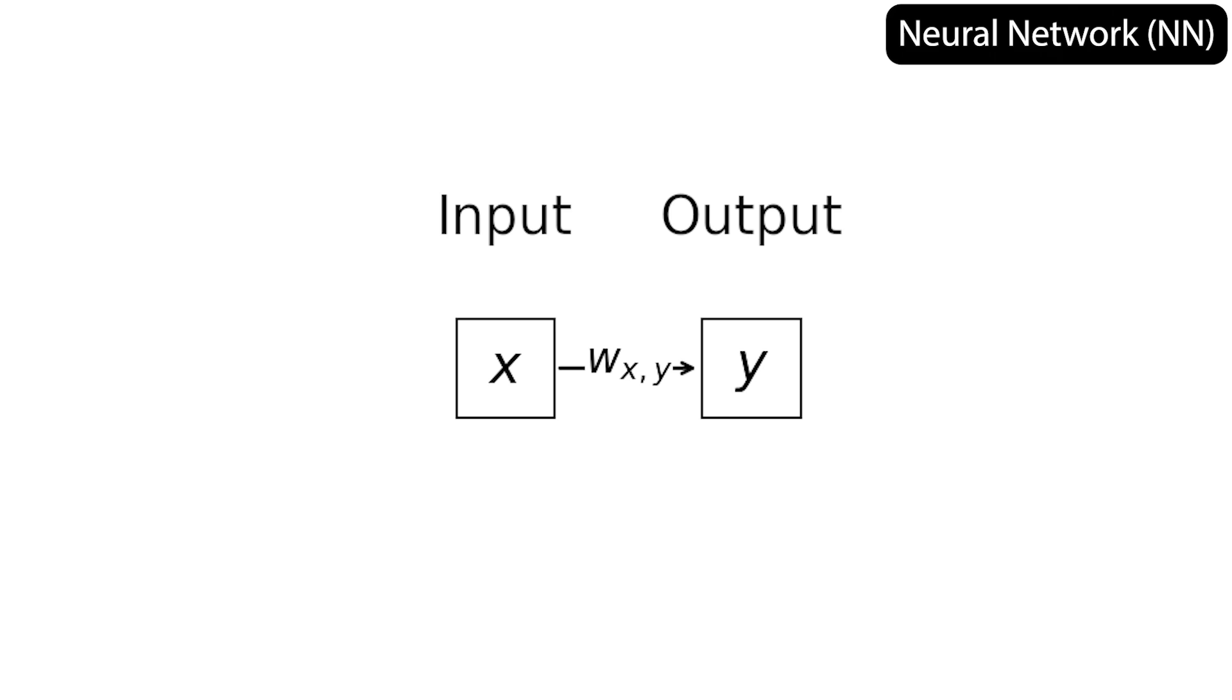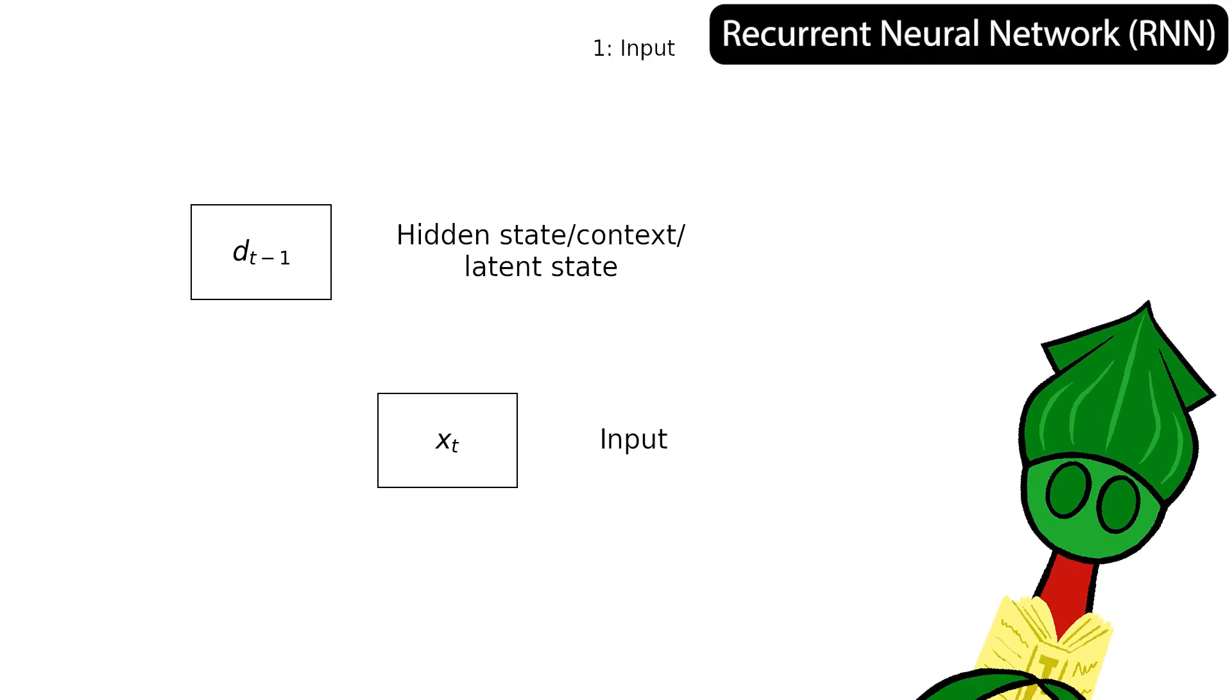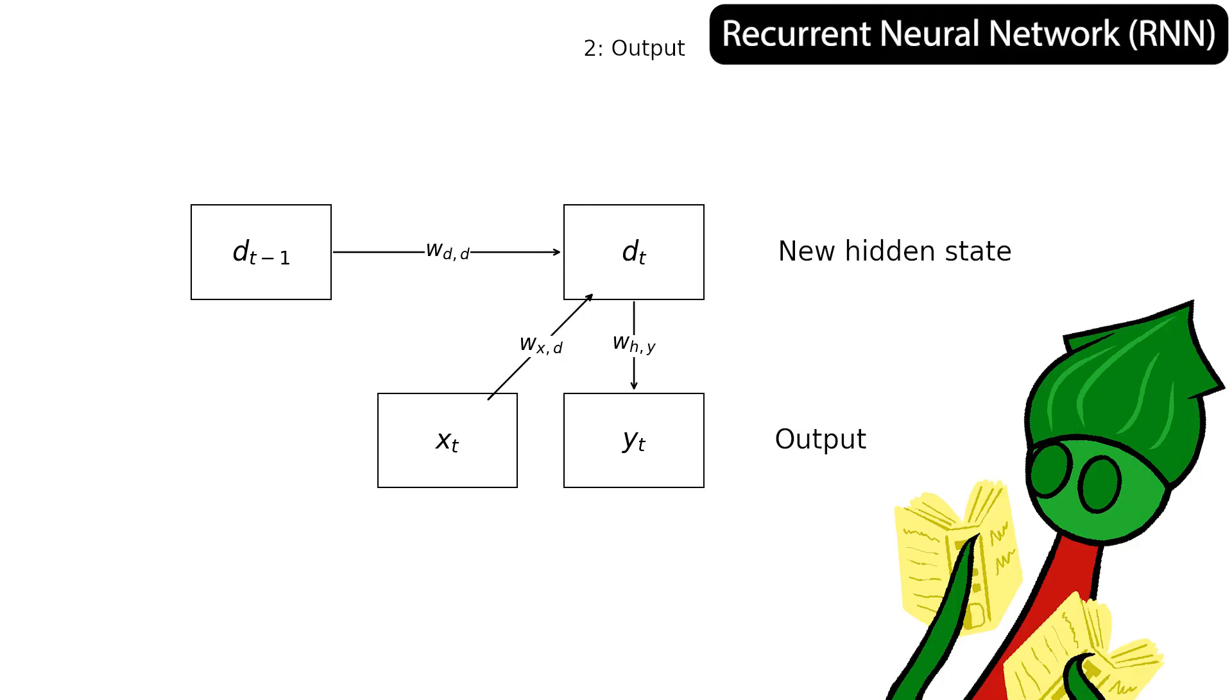A neural network gets an input and makes an output. A recurrent neural network, or RNN, gets an extra input, a hidden state at the previous time t, also known as a latent state or a context. It's like the model's diary describing previous inputs. The RNN also makes another output, it makes a new hidden state, like it's rewriting its diary.